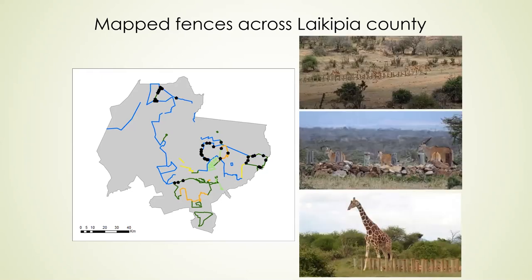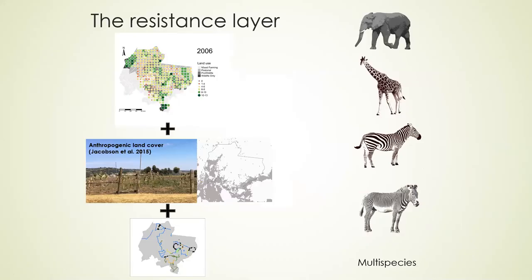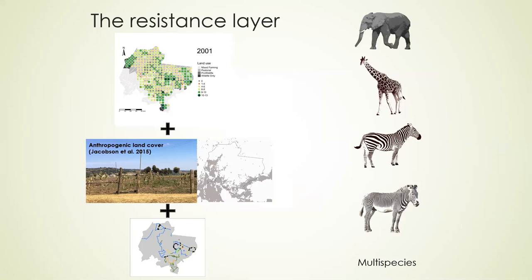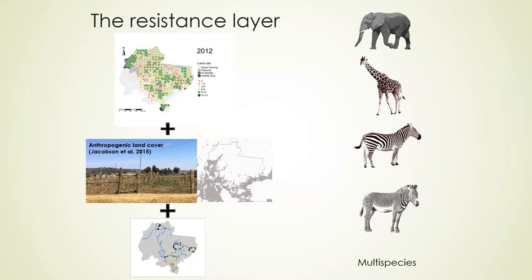We mapped the entry and exit points — connecting corridors between key areas. As you can see with the black dots, these are areas we identified as having openings that allow wildlife to move between one conservancy or area to another. We then created a resistance surface based on land cover within the area — the main anthropogenic activities within the county — assuming there will be less wildlife movement in settled areas or those with higher disturbances.